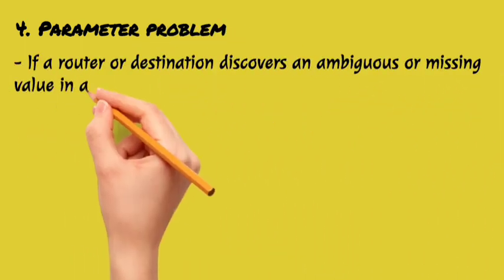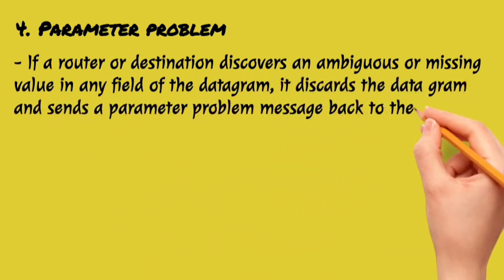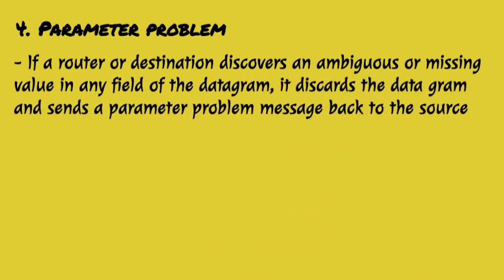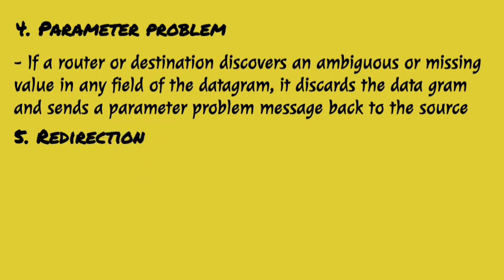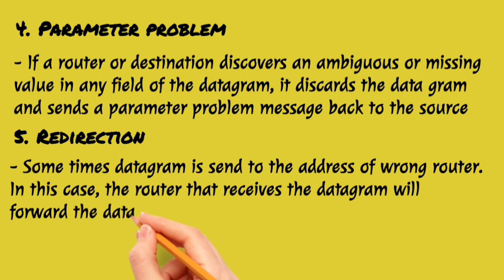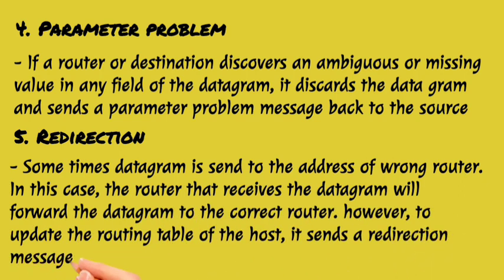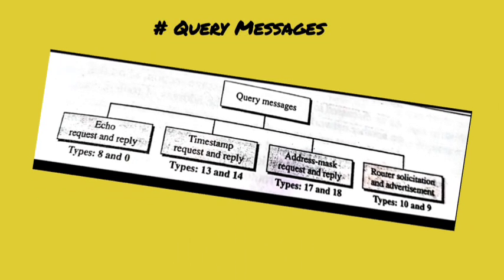The parameter problem message: if there is any ambiguity in the header part, a serious problem can occur. If the destination host has any ambiguity or a missing value in a field, a parameter problem message is sent back to the source. We also have redirection: sometimes data is sent to the wrong address, so the router receives the data, forwards it to the correct router, and sends a redirection message back to the host.